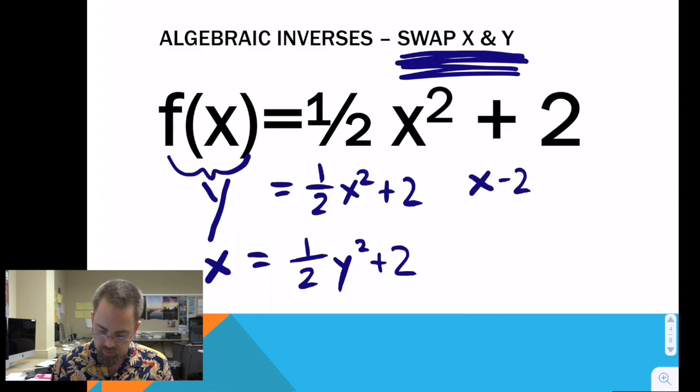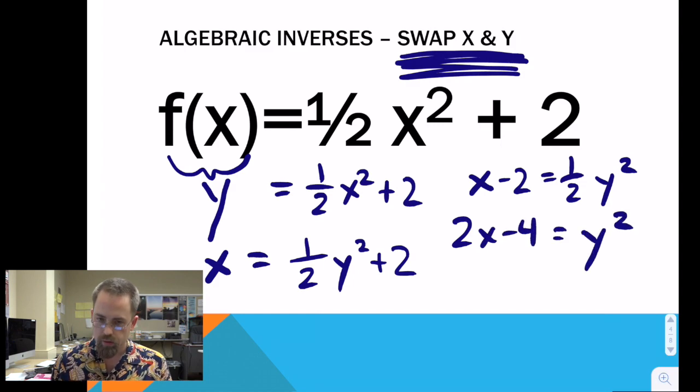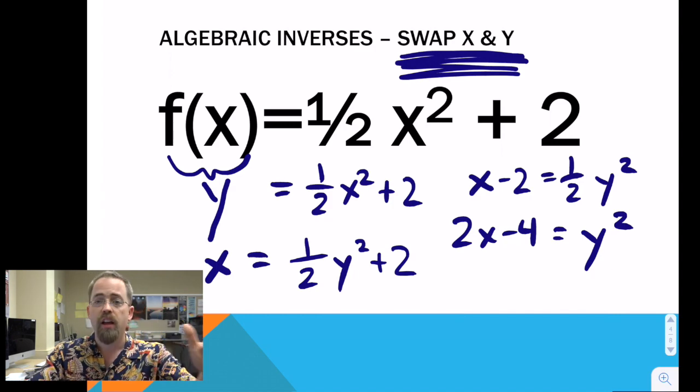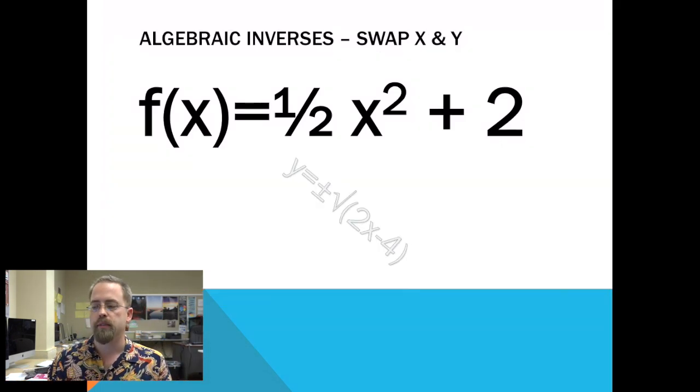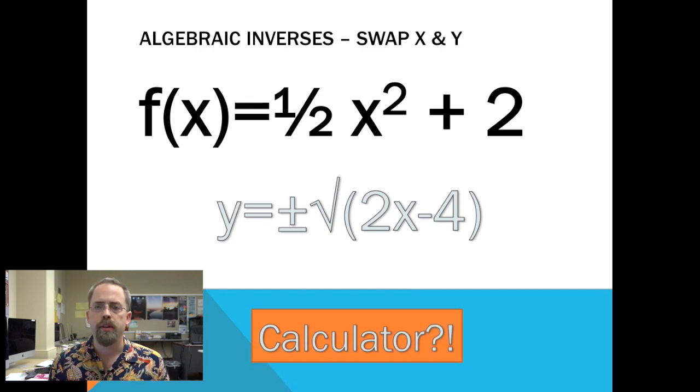Now we're trying to get another function, where y is alone, so we can see what the inverse function looks like. So, we subtract 2 from both sides and we multiply both sides by 2. 2x minus 4 equals y squared. How do I get y by itself? It's squared right now. That's right, I take the square root. But if I take the square root, then I must be sure to include what symbol? Yes, the plus or minus symbol. When you take the square root, you must supply plus and minus.